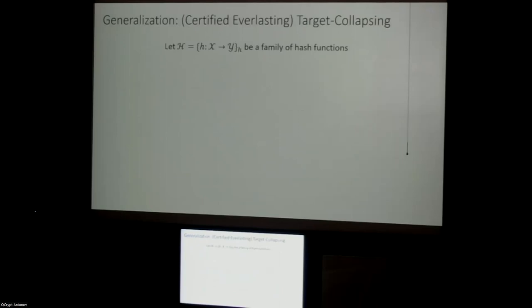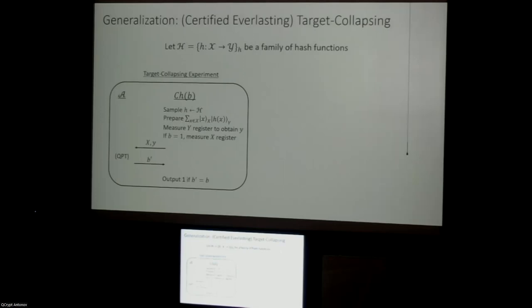We define the notion of target collapsing and certified everlasting target collapsing for any family of hash functions. In the target collapsing experiment, we sample a random hash, prepare a uniform superposition over inputs x, evaluate the hash function, measure the output to get Y — giving us a superposition over pre-images of Y — and then depending on bit b, we either measure it or not, and ask the adversary to guess whether we measured. This is similar to the well-known notion of a collapsing hash function but is actually a weakening: in collapsing, the adversary prepares the initial superposition; in target collapsing, the challenger prepares it and sends it to the adversary, giving the adversary less power. This is analogous to the classical weakening from collision resistance to target collision resistance or universal one-way hash functions.